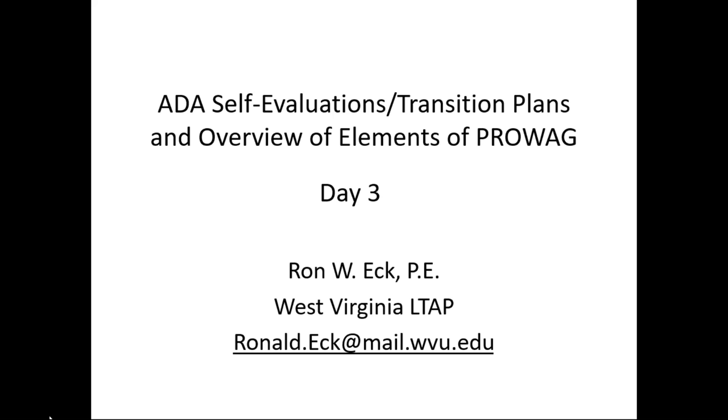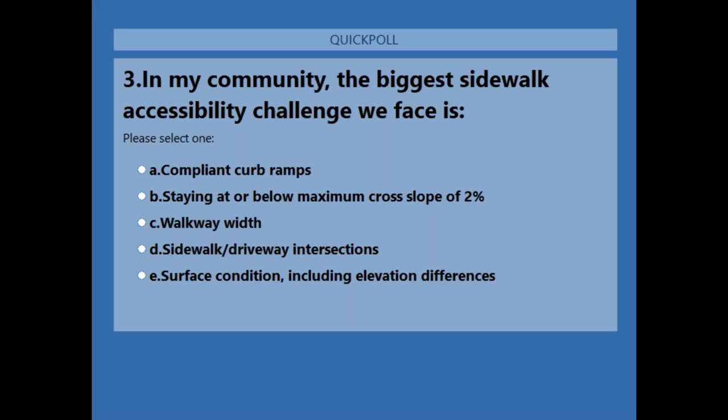Before we begin, I'm running a poll asking what your biggest sidewalk accessibility challenge is in your community. Options include compliant curb ramps, staying at or below the maximum cross slope of 2%, walkway width, sidewalk-driveway intersections, and surface condition including elevation differences. If you're having trouble voting, take your screen out of full screen mode by pressing escape.